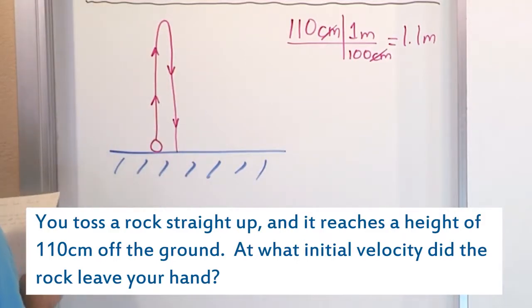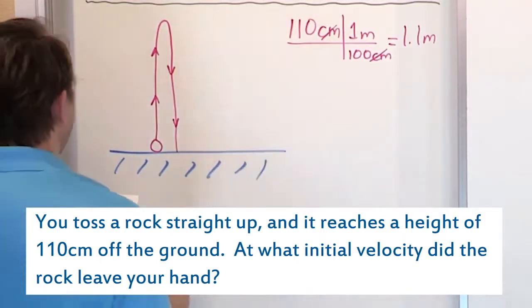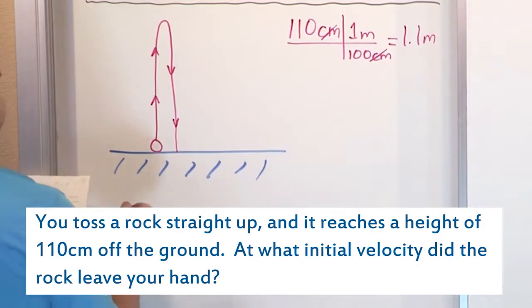It says you toss a rock straight up. It reaches a height of, now we know, 1.1 meters. So what we know is that the rock starts down here at an initial position of zero meters. Remember the starting place. Wherever you start the motion from is your zero meter point.